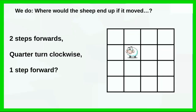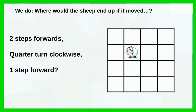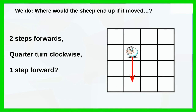With this question we're going to do it together. Where would the sheep end up if it moved two steps forwards? The sheep is facing this direction — looking down. If going forward, it goes this way. Two steps forwards: one, two. Now I've got to turn clockwise, which is turning towards my right. Remember, I'm facing forward, so on the screen it looks to your left but it's actually to my right. Move one step forward — that's where the sheep is.